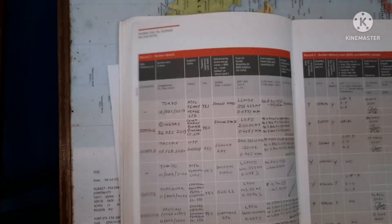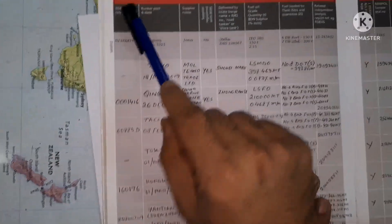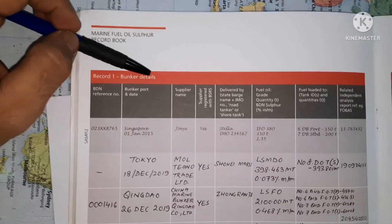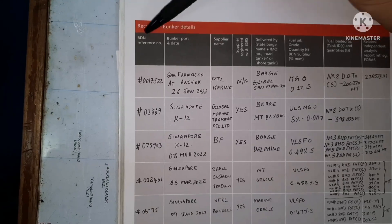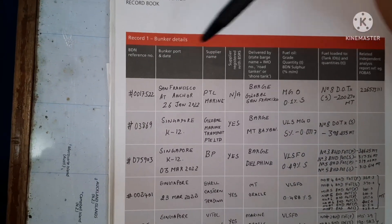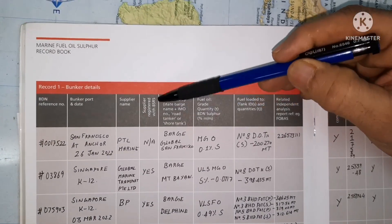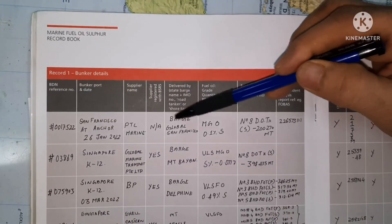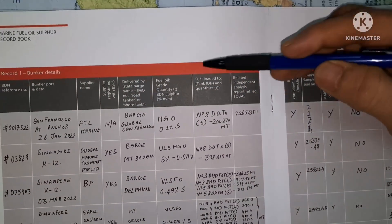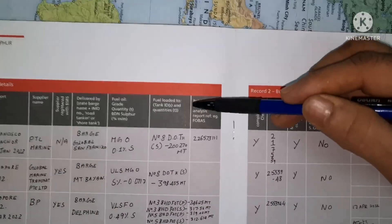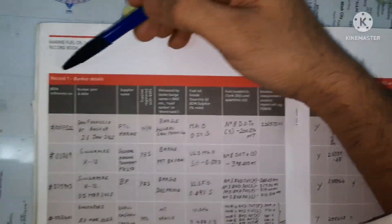This is Record 1. Record 1 requires bunker details. Say I take bunker on 02 July 2022. The information we need to record includes: BDN reference number, bunker port and date of bunker, supplier name, whether the supplier is registered or not, whether it is delivered by barge, truck or tanker, the fuel oil grade, where the fuel oil is loaded, and the related independent analysis report reference.